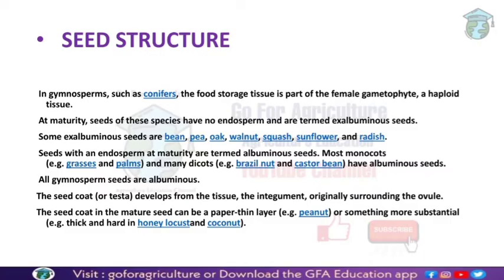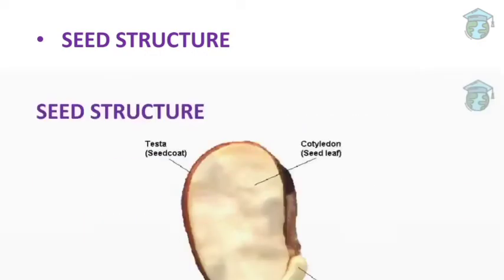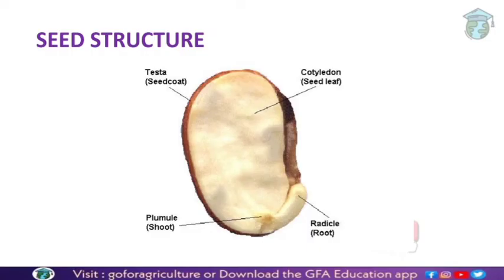In endospermic seeds, the endosperm is present after maturity. The seed coat develops from the integument during maturation. The seed coat can be paper-thin, like in peanut, or it can be hard, like in honey locust and coconut. In pictorial form, the seed structure shows the outer covering which is the seed coat, and the central portion shows root formation on both left and right sides. This is the basic seed structure.